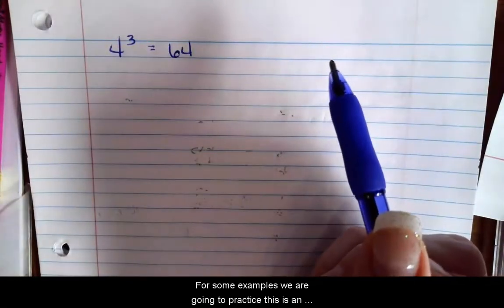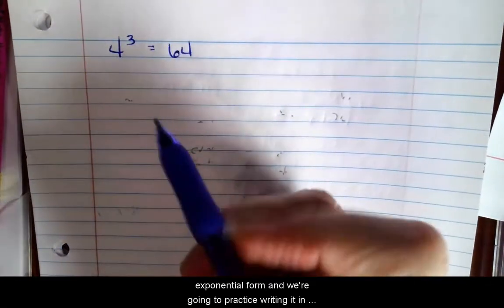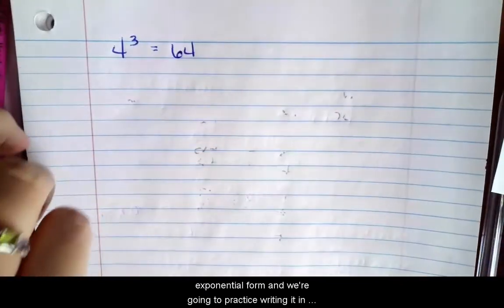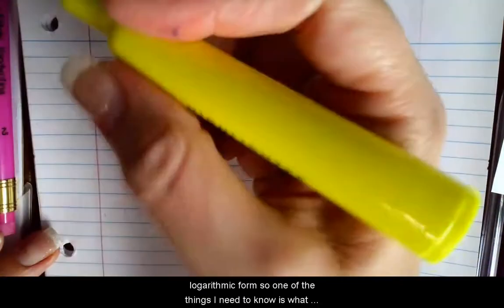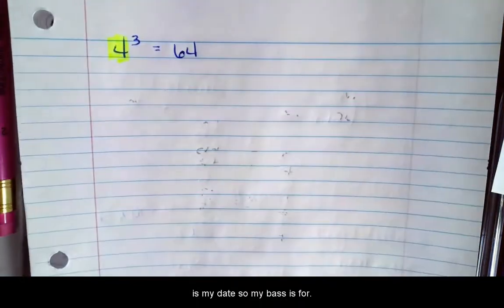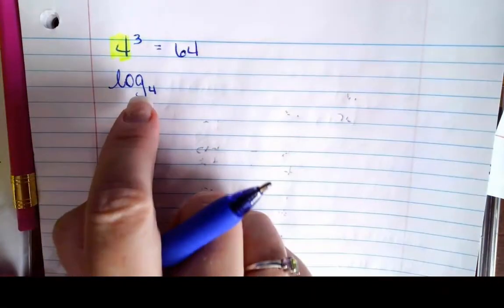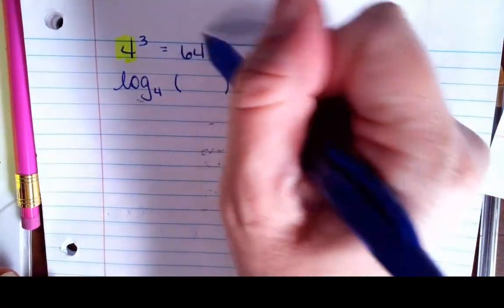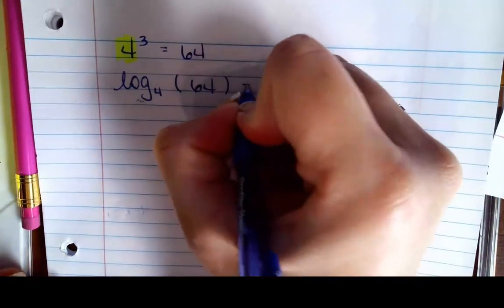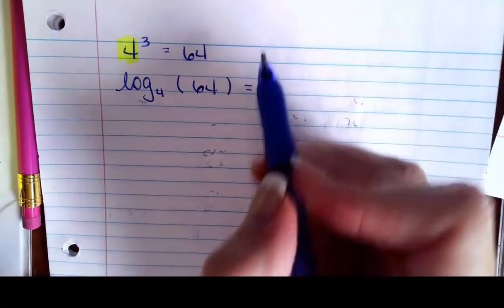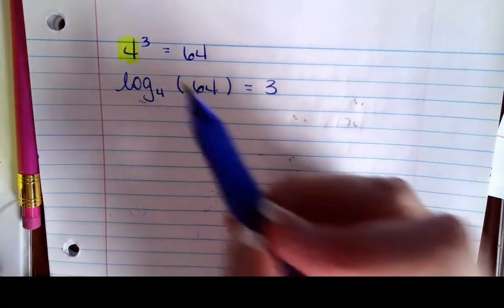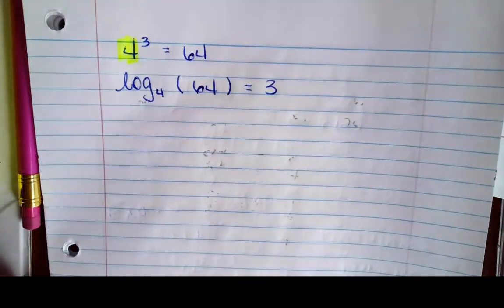For some examples, we are going to practice. This is an exponential form, and we're going to practice writing it in logarithmic form. So one of the things I need to know is, what is my base? My base is 4, so I'm going to convert this by saying I have a logarithm in base 4, so it drops to a subscript. And then the argument is the answer, which is 64, and it equals the exponent. So just make sure that your bases match, and then the rest of it kind of falls into place.